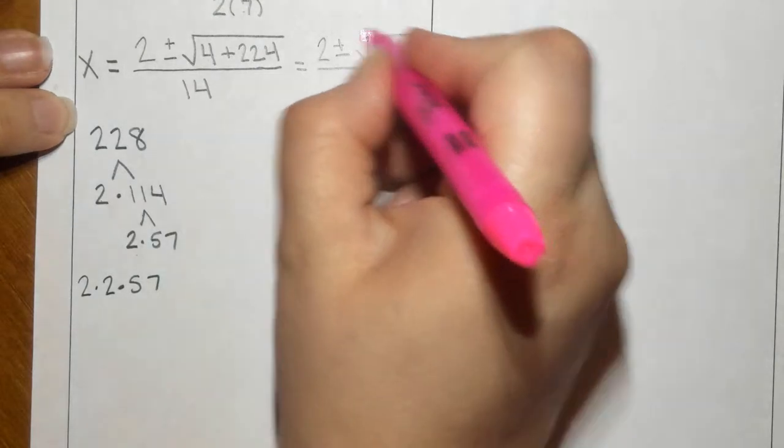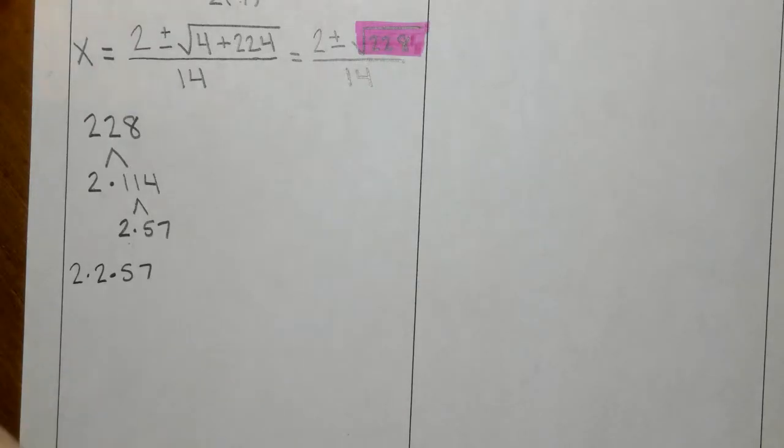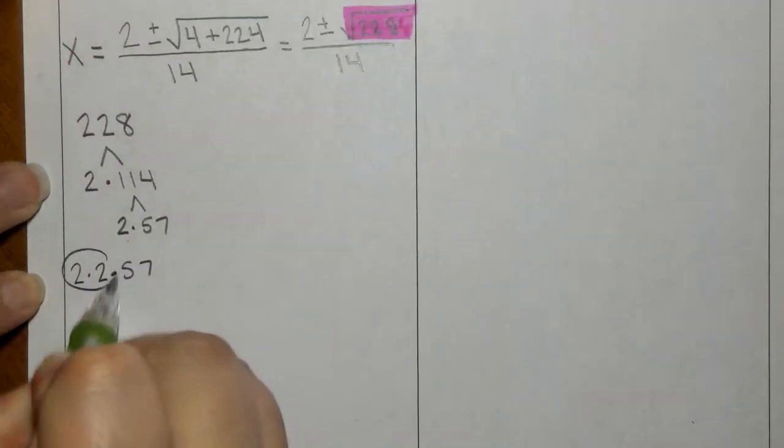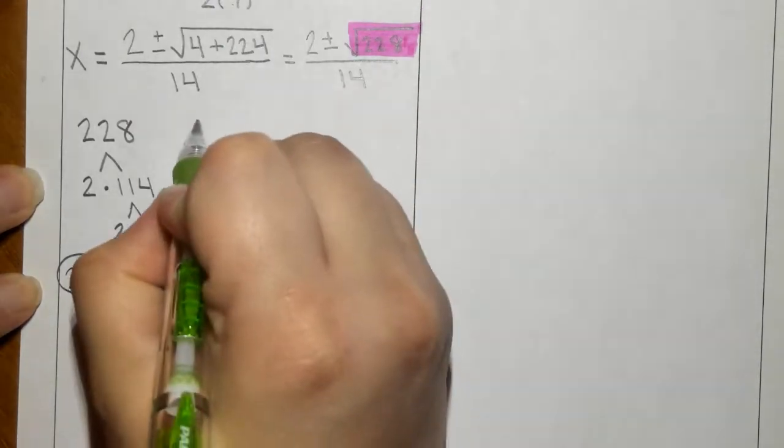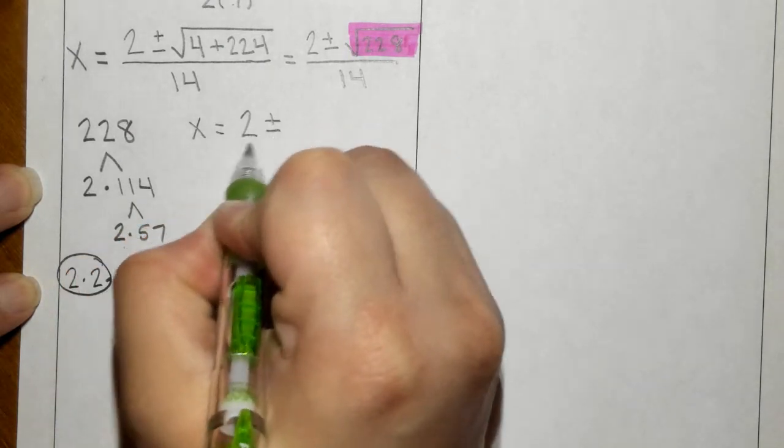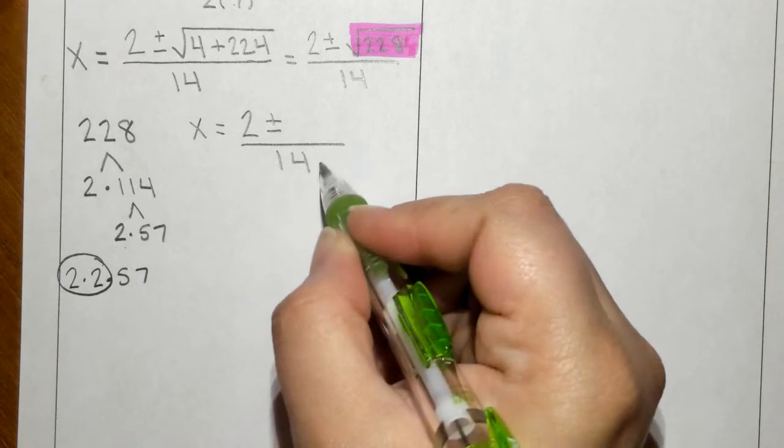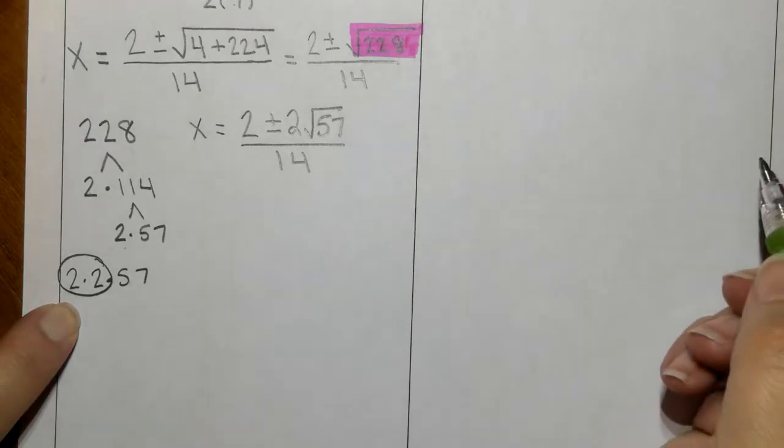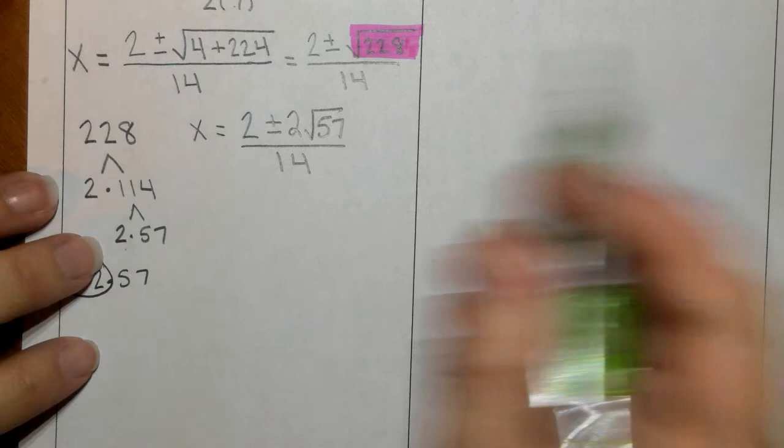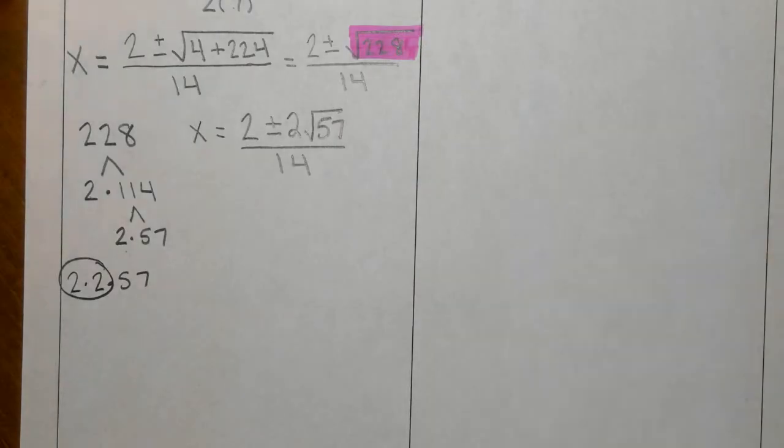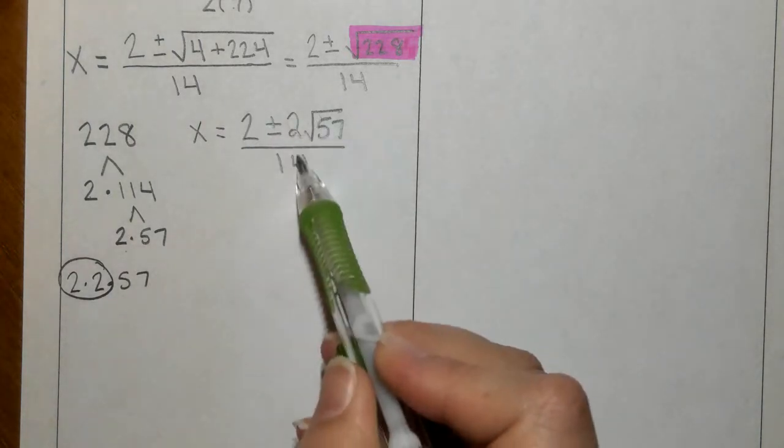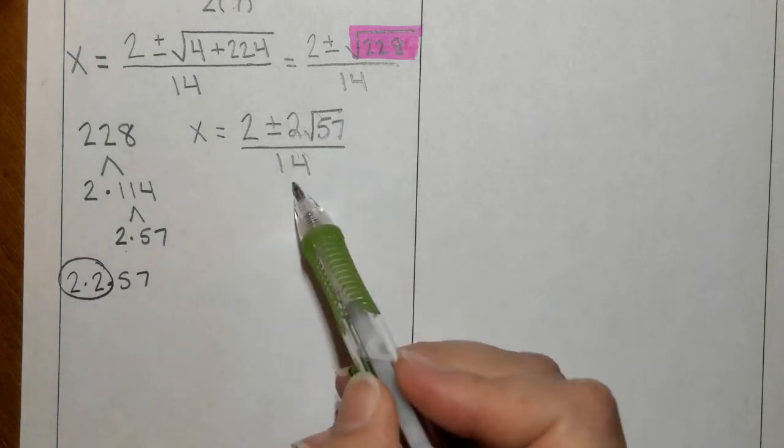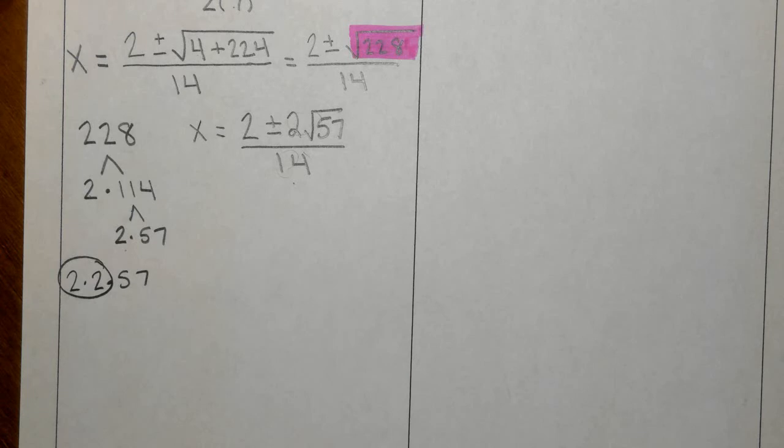So this part of our answer is going to be changed with the new radical. We have a pair of twos, so we would say two plus or minus, and we add our over 14. This radical now will be two square root 57. We learned last lesson how to simplify the radical. When you look at all three spots and you see these numbers that are not in a radical, if they can reduce, you need to reduce them, and they can by two.